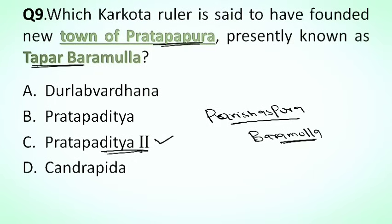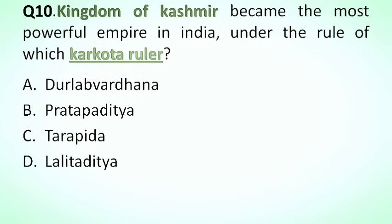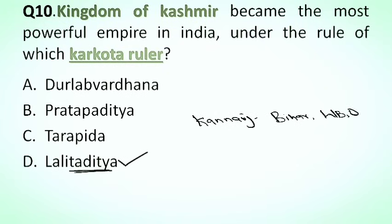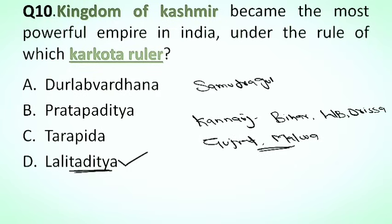Our next question is: the Kingdom of Kashmir became the most powerful empire in India under which Karkota ruler? Options: A. Durlabhavardhana, B. Pratapaditya, C. Tarapida, D. Lalitaditya. The correct answer is option D, Lalitaditya. Lalitaditya attacked Kannauj, Bihar, West Bengal, Orissa, and on his way back to Kashmir he also attacked Gujarat, Malwa, and many other parts of India. That is why he is known as the Samudragupta of Kashmir. Lalitaditya ruled from 724 to 761 AD.